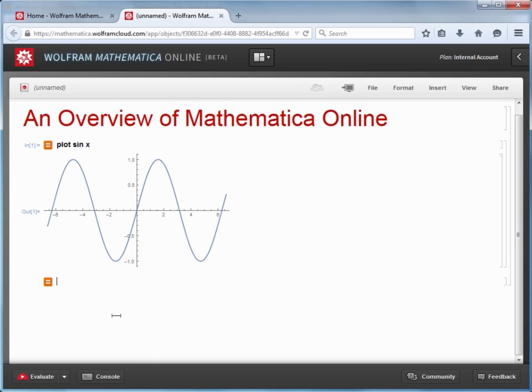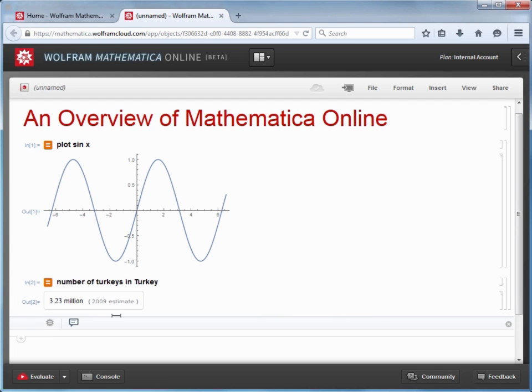So let's do something trivial like we'll find the number of turkeys in Turkey, and that will return a result for us. So Mathematica online can distinguish between the animal Turkey and the country Turkey, and use that information to look up the relevant data and then return the answer to the question.